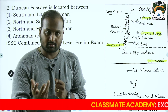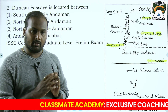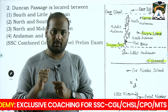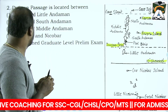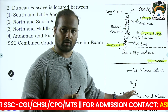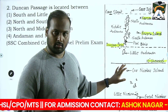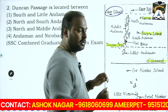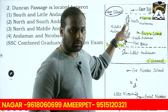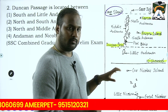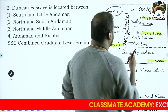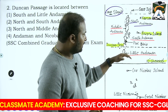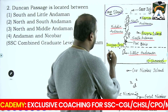Next question: 'Duncan Pass is located between...' For SSC, one of the most important topics is islands - whether Andaman & Nicobar Islands or Lakshadweep Islands. You can expect a lot of questions from these islands. The Andaman and Nicobar Islands are divided as: North Andaman, Middle Andaman, South Andaman and Little Andaman. Between South Andaman and Little Andaman is the Duncan Pass - so your answer is South Andaman and Little Andaman.